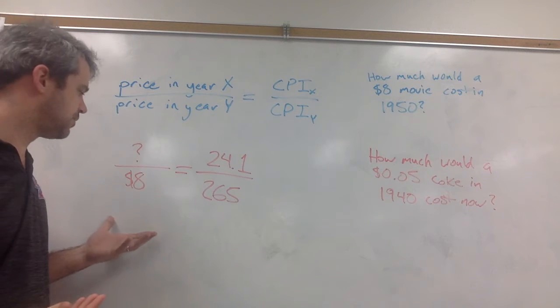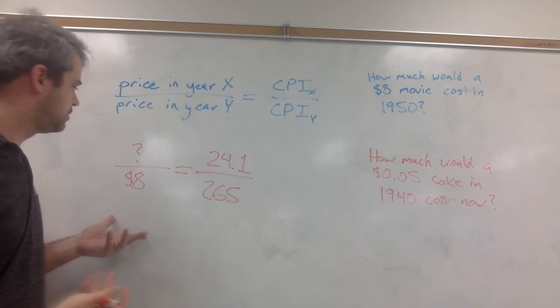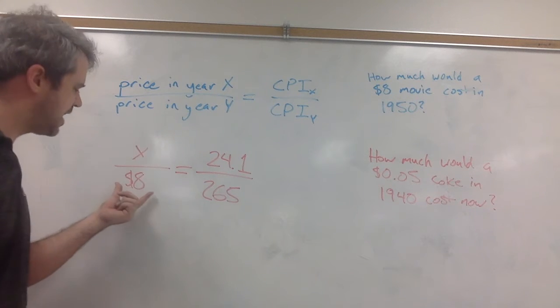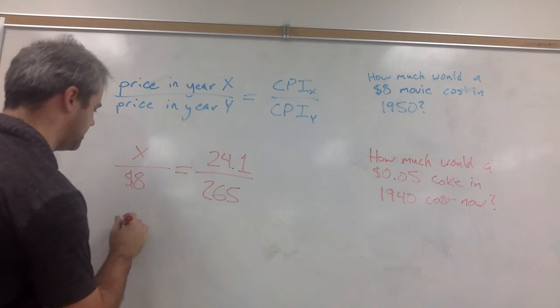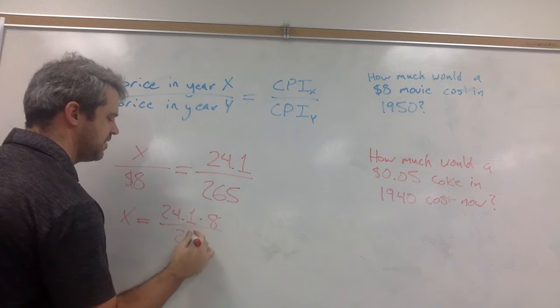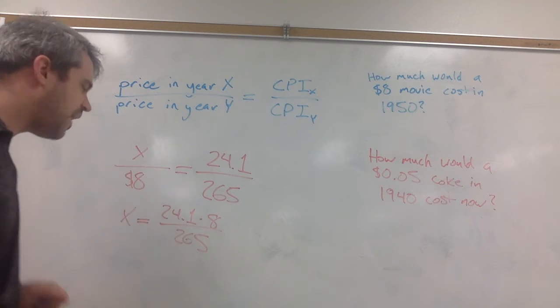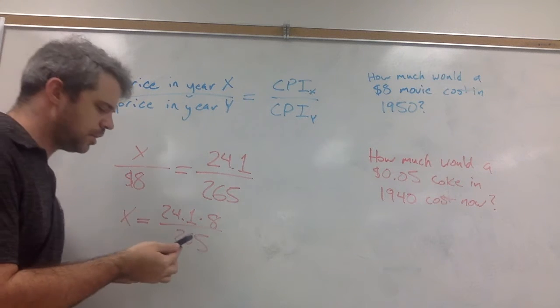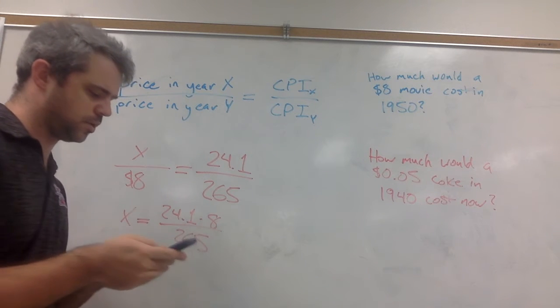All right, so how do we solve for this? Well, we can cross-multiply, or in this case, we just really need to multiply this to the other side. So 24.1 times 8 divided by 265. Okay, so let's do that calculation real quick.